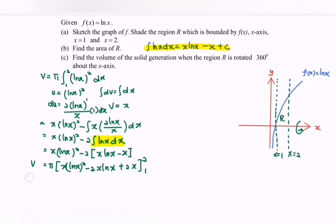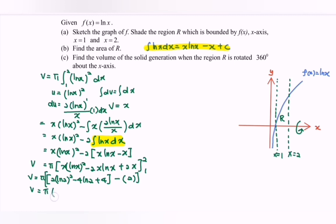Substituting the limits: at x = 2, we have 2(ln 2)² minus 4 ln 2 plus 4; minus at x = 1, ln 1 equals 0 and ln 1 equals 0, giving a value of 2. So V equals pi times [2(ln 2)² minus 4 ln 2 plus 2]. Therefore, V equals 0.188π cubic units. That is the volume.